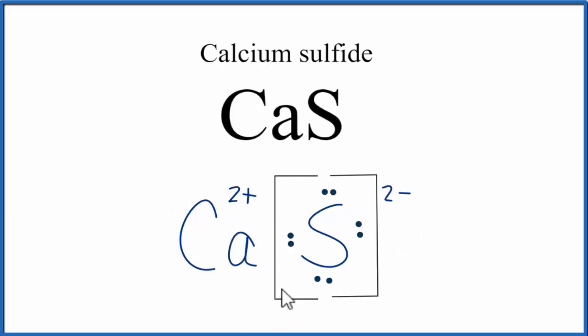What we've drawn here is what's called a formula unit. Calcium sulfide is normally a crystal, and it's made up with a bunch of formula units in a repeating pattern.